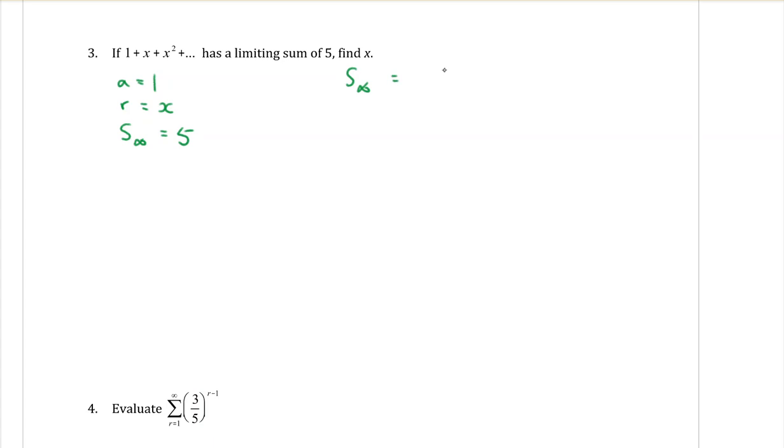Let's put it in our formula. Limiting sum equals A over one minus R. So the limiting sum is five equals one over one minus X. And we're solving for X.